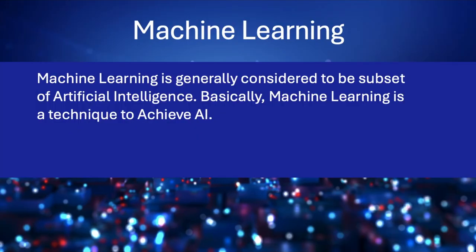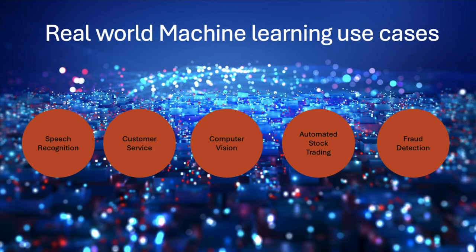Now, machine learning. Machine learning is generally considered to be a subset of artificial intelligence. Actually, machine learning is a technique to achieve artificial intelligence. Machine learning is a branch of artificial intelligence and computer science that focuses on using data and algorithms to enable AI to imitate the way that humans learn, gradually improving its accuracy.